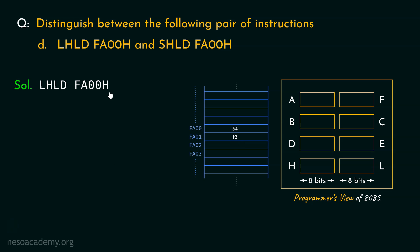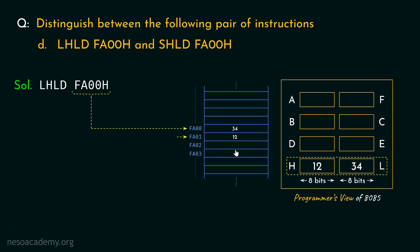The mnemonic LHLD stands for 'load HL pair using direct addressing.' The content of the first memory location FA00, which is 34, will be loaded into the L extension of the HL register pair. Thereafter, the content of the consecutive memory location FA01, which is 12, will be loaded into the H part of the HL register pair.